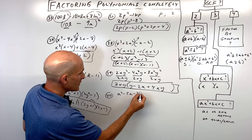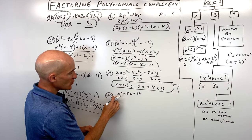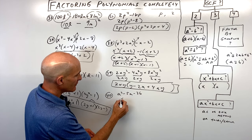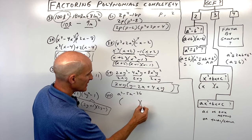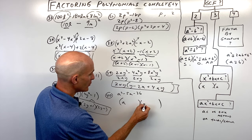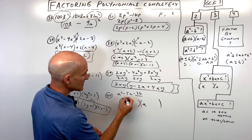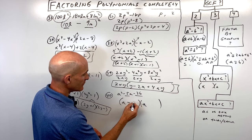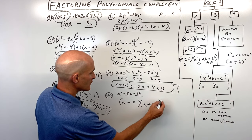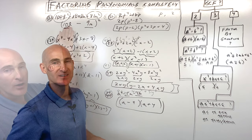Number forty is a trinomial with leading coefficient 1 and no greatest common factor. What two numbers multiply to negative 36 but add to negative 5? That's negative 9 and positive 4 — fully factored.